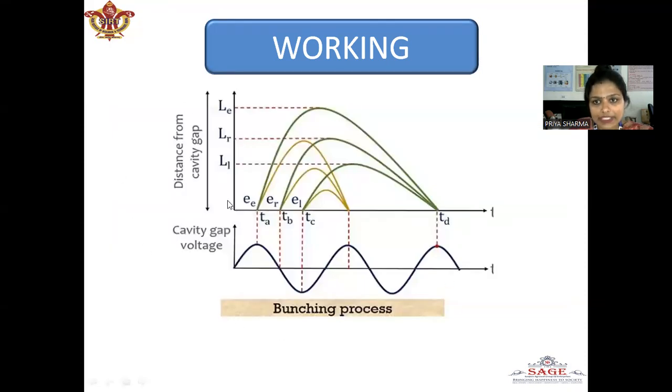This is known as the Applegate diagram. Where we can see the early electron reaches and when the early electron reaches to the repeller space, the voltage goes to negative. The EL denotes the late electron which is at the maximum negative voltage and EE which is the early electron which is at the maximum positive voltage. This is how the electrons travel.